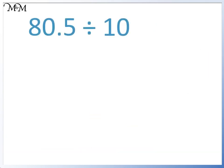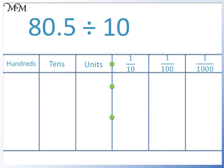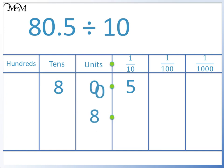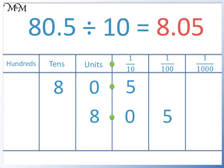Here's our final example: 80.5 divided by 10. Again, we write 80.5 on our place value grid. To divide by 10, we move each digit one place to the right. We'll start with the 8 — it moves from the tens column to the units column. Next, 0 moves from the units column to the tenths column. And finally, we move 5 from the tenths column to the hundredths column. The number we have is 8.05. So 80.5 divided by 10 equals 8.05.